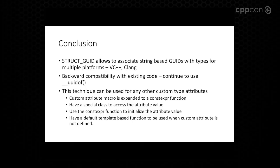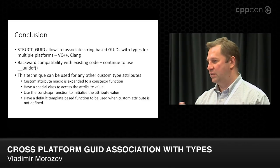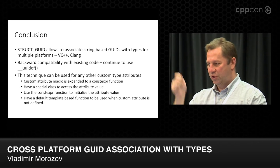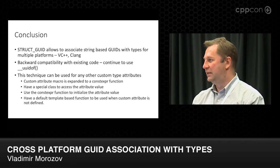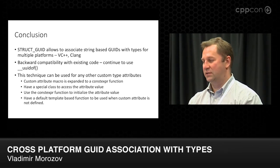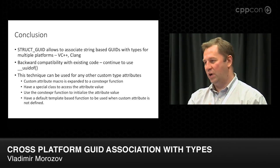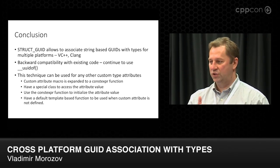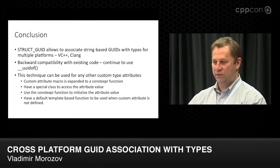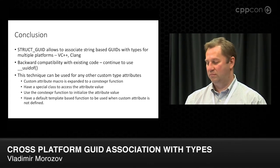We have a pretty good solution for the cross-platform GUID story, but I think a similar technique can be applied for any other kind of custom type traits you may have in your code. Today it's pretty easy to have types associated with other types, but what if you want to associate some values or calculate something? A similar technique applies: you define a macro that expands to a function, have some special type traits to access the value, initialize the value from the function, have a default case, and you're done.